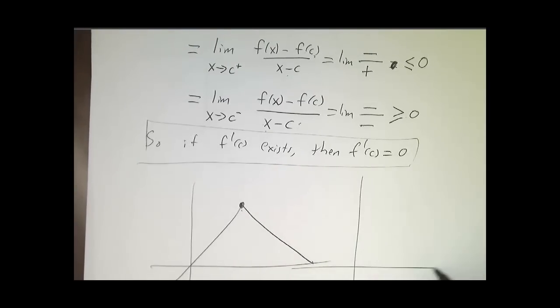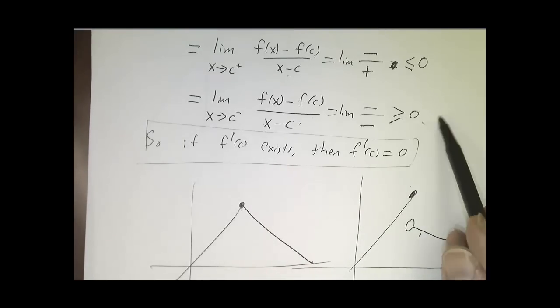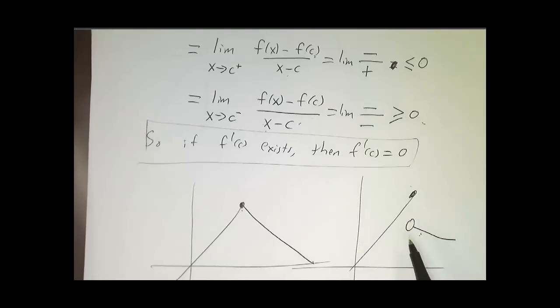You can have a situation where a function is even discontinuous. There's a local maximum, but there's no derivative. But what you can't have is a derivative that's positive or a derivative that's negative. If the derivative exists, it's got to be zero.